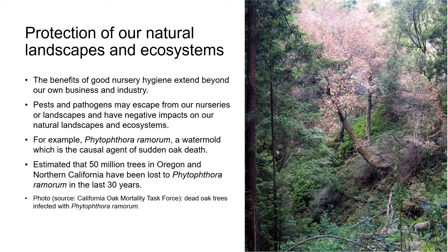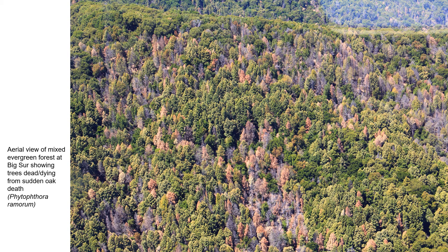It's estimated that 50 million trees have died in California and Oregon forests in the last 30 years as a result of Phytophthora ramorum, which was introduced unintentionally to the wild through infected plants from the nursery trade. Tan oak has been the main victim of sudden oak death, as you can see in the picture on the right, but coast live oak and a number of other native shrubs and trees have also been lost. This photo here is an aerial view of a section of the mixed evergreen forest at Big Sur, and you can see a pattern of trees that are dead or dying from sudden oak death.